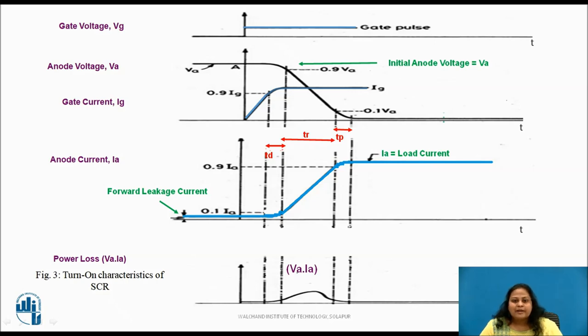Let us now see spread time TP. Spread time is the time required for the forward blocking voltage to fall from 10% of its initial value Va to on-state voltage drop. It can also be defined as the time required for the anode current to rise from 90% to 100% of its final value IA. After the spread time, anode current attains steady-state value and the voltage drop across the SCR is equal to the on-state voltage drop of the order of 1 to 1.5 volts depending on the SCR's rating.